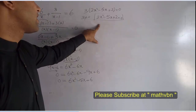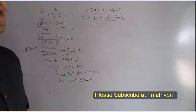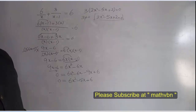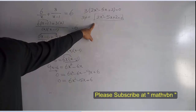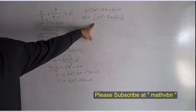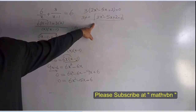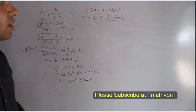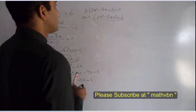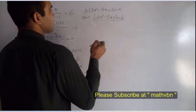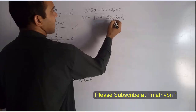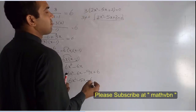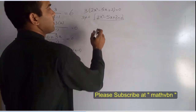Because we are required to solve this equation with the help of factorization, it is very simple to factorize this equation. So let me summarize the rule: first of all, multiply the coefficient of x squared and the constant term.